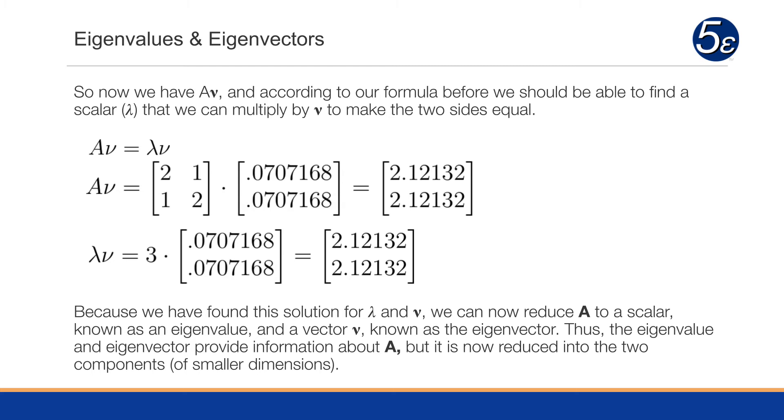So recall from the previous slide that we did A times nu, which was the matrix 2, 1, 1, 2 times the eigenvector 0.0707168, with another 0.0707168. This equals the vector 2.12132, 2.12132. If we take that eigenvector 0.0707168 and 0.0707168, can we find a lambda that we can multiply to get us that same value? And the answer is yes. It's 3.